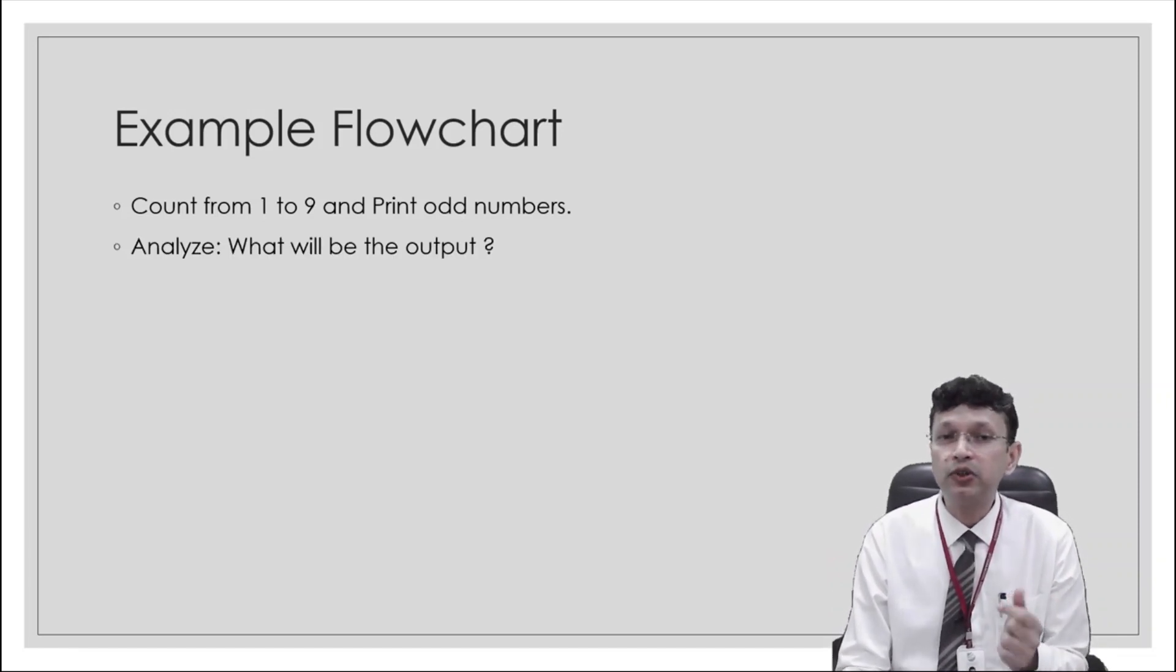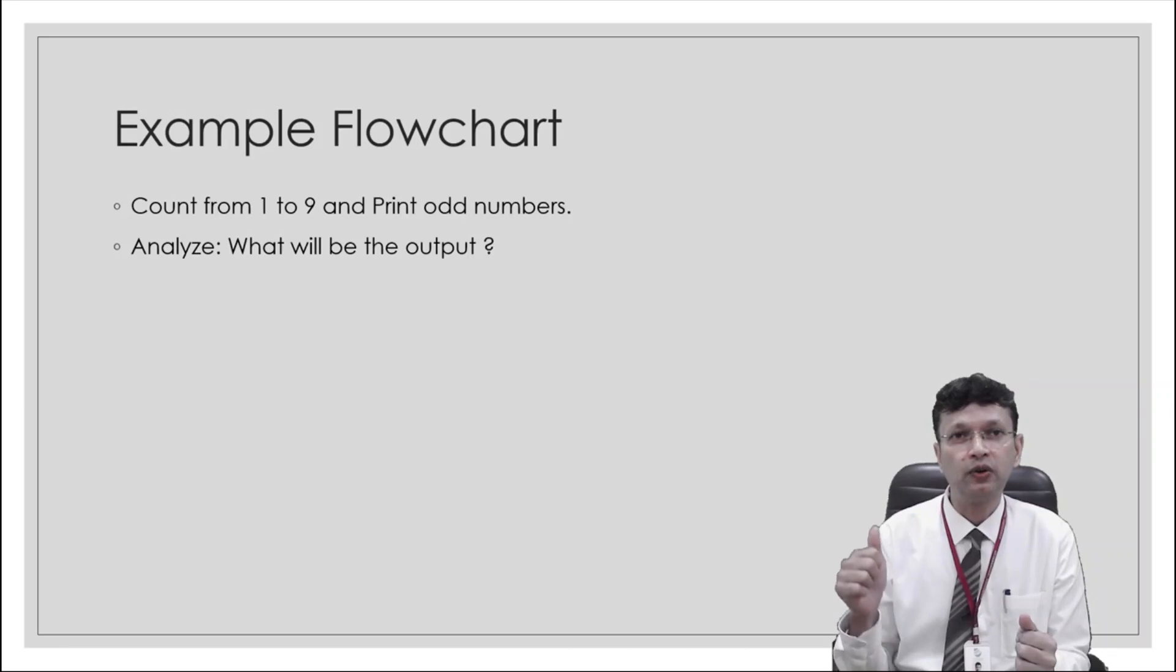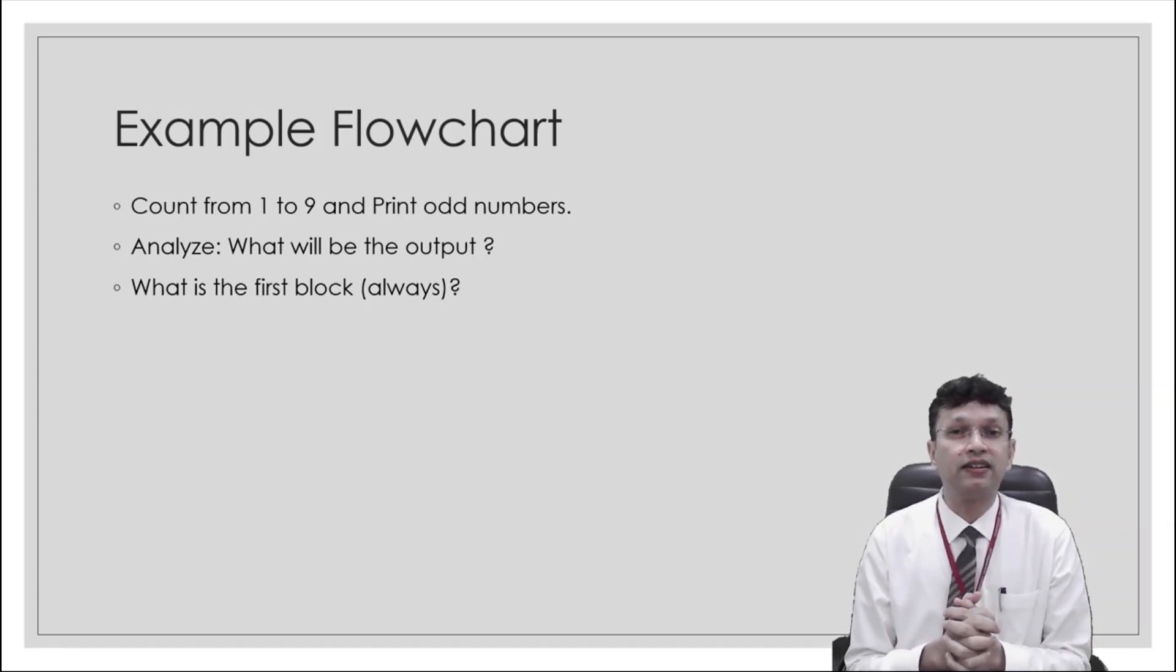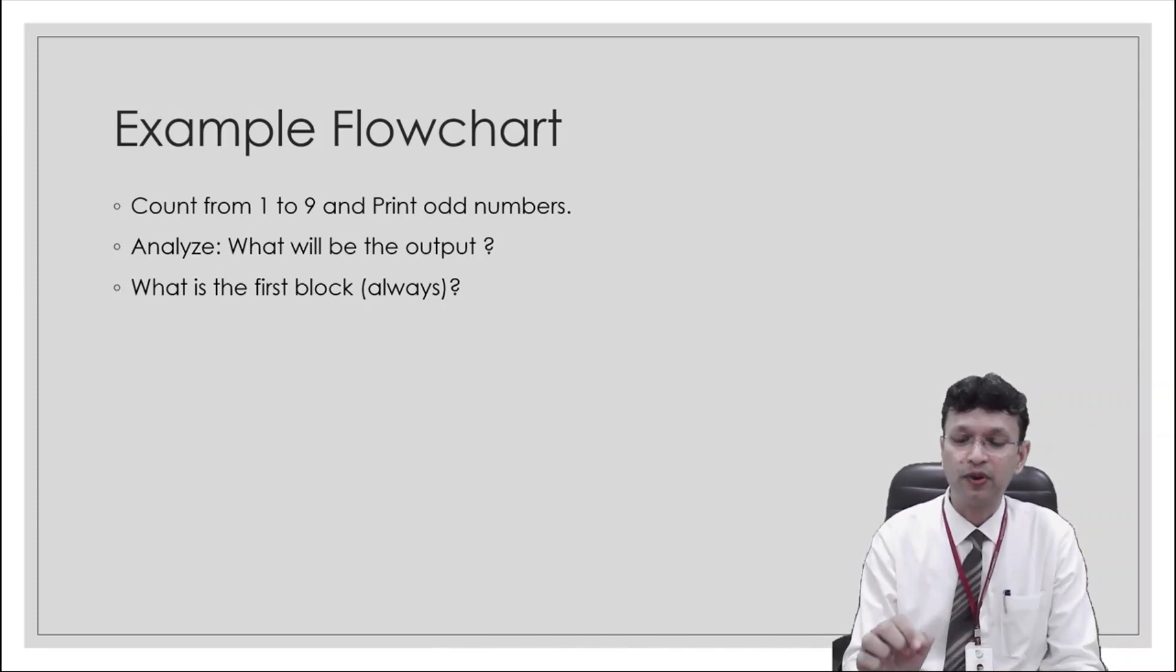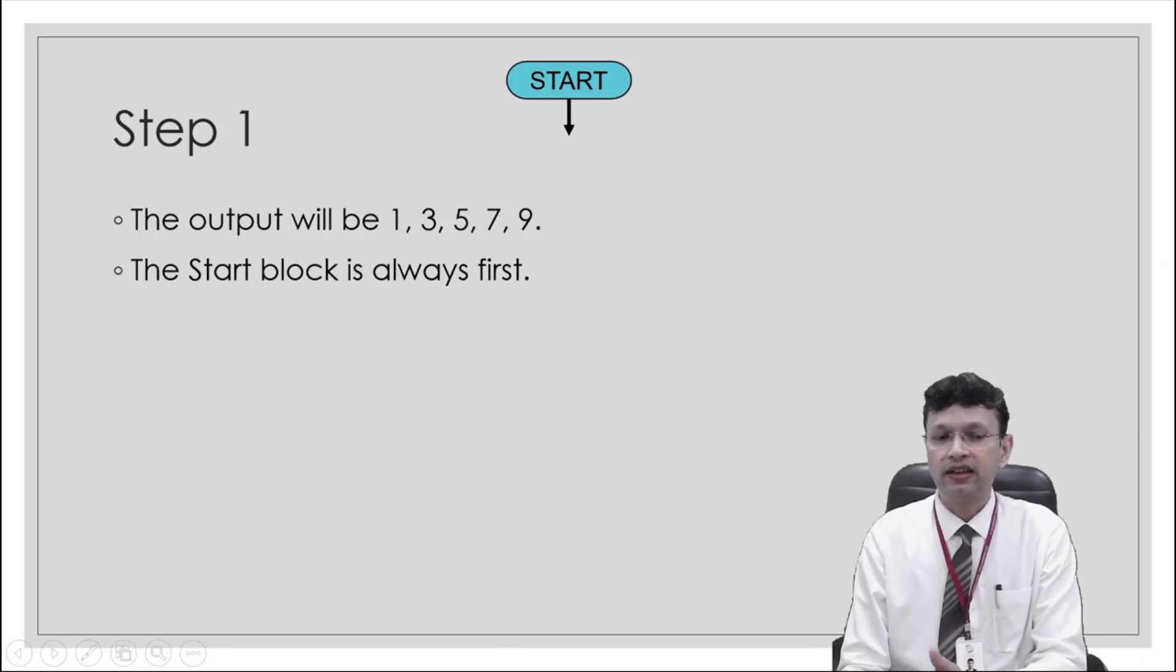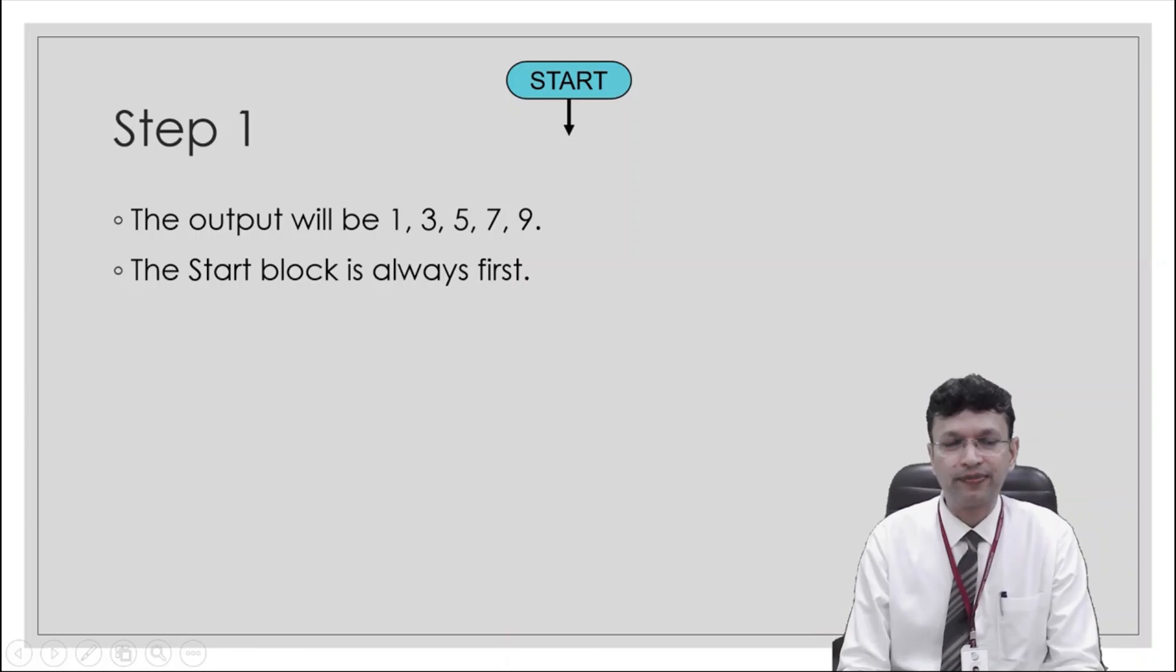So first task will be to analyze. What will be the output? The output we have just decided it will be odd numbers 1, 3, 5. And if we have to represent it using flowchart, where will be the starting point? The starting point is always the first block is always what? The start. So the output will be 1, 3, 5, 7, 9. And the start block is always the first. So we'll start with the start.